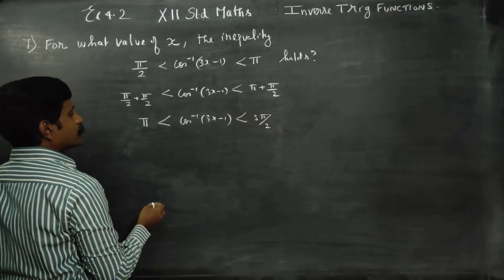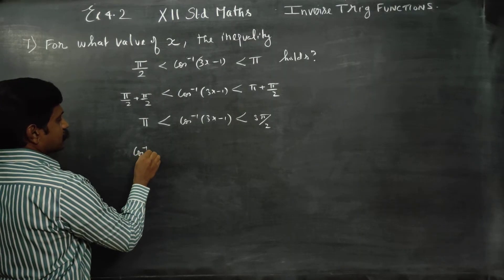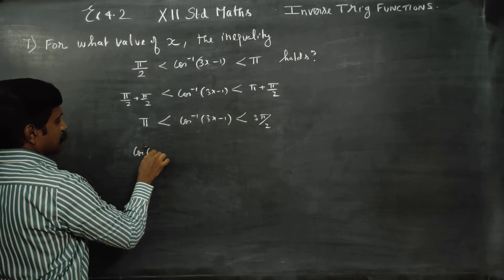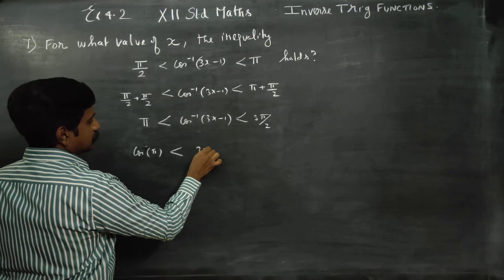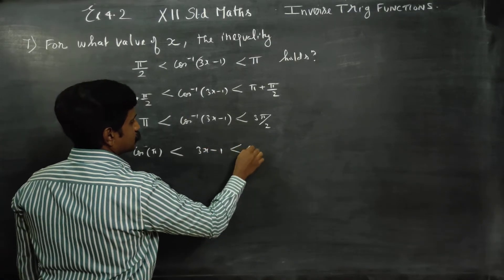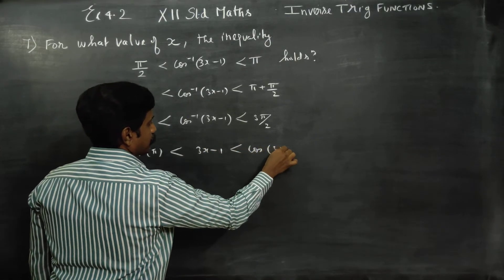Applying cosine, we have cos π on the left and cos of 3π by 2 on the right.